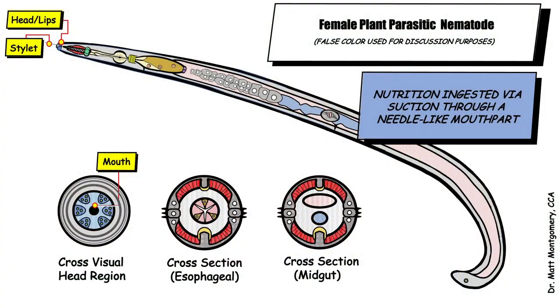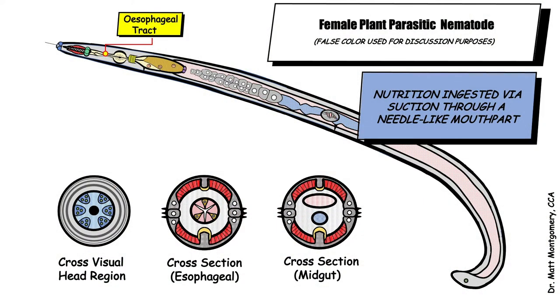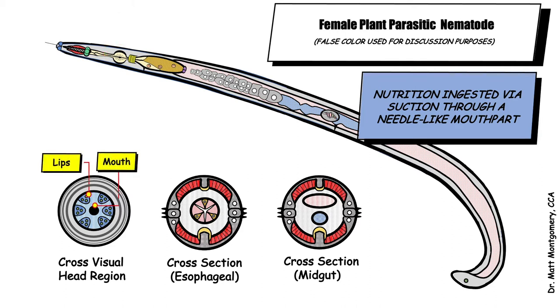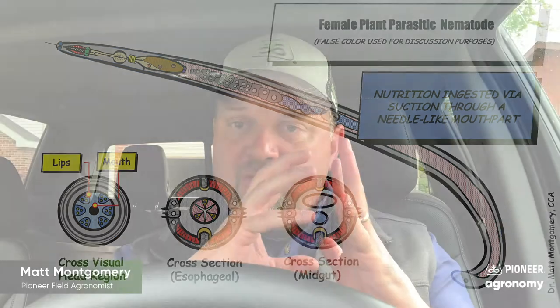Now let's talk about how these organisms feed. Plant parasitic nematodes have a mouth, but that mouth doesn't open and close. Instead, all plant parasitic nematodes have a needle-like mouth part called a stylet. That stylet comes out through the mouth opening, penetrates the root, enters plant cells, and begins to suck juices out. That's how nematodes feed — through suction, drawing in cytoplasm from the cell into the stylet and down their esophagus. Nematodes occasionally have structures called lips on the front that, when suction is applied, allow the nematode to firmly attach like a plunger to that root system.